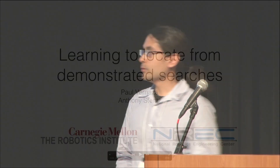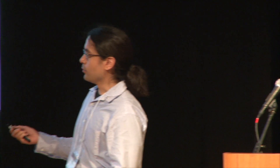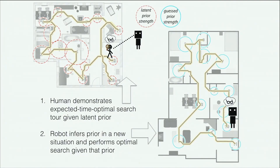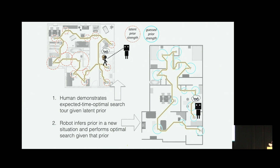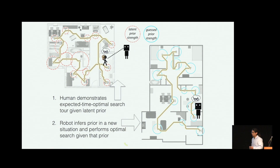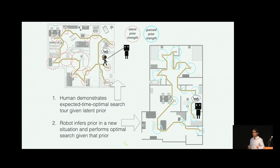My name is Paul Vernazza, and this is work I did with Tony Stentz at CMU, particularly the National Robotics Engineering Center. The basic problem is very simple: we want to teach a robot to locate things efficiently in novel environments. In the paper we considered an elderly care scenario where we want to locate grandma's glasses efficiently. We approach this as a learning from demonstration problem, or more specifically an inverse optimal control problem.